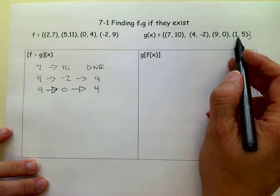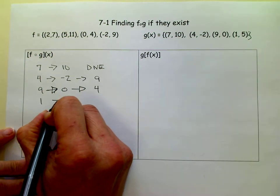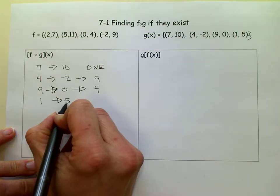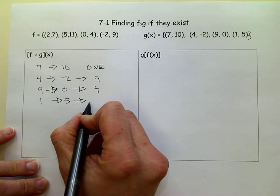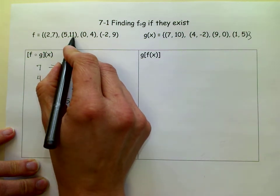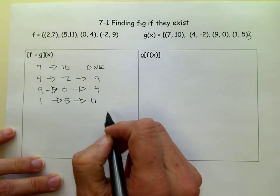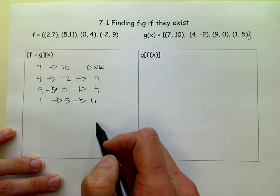And we've got to go through each x, so the next one is 1, which yields us a 5. We go to f and we get an 11, because f of 5 is 11. So we found that that 1 didn't exist, but we found the others.